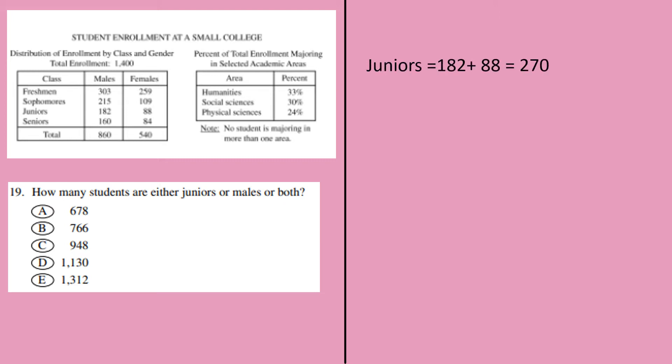If you're trying to find how many students are either juniors or male or both, the juniors will be both male and female: 182 plus 88, which is 270.